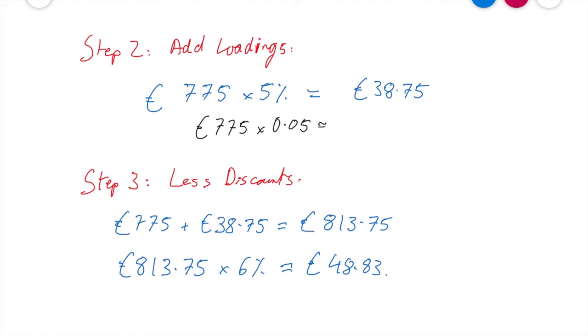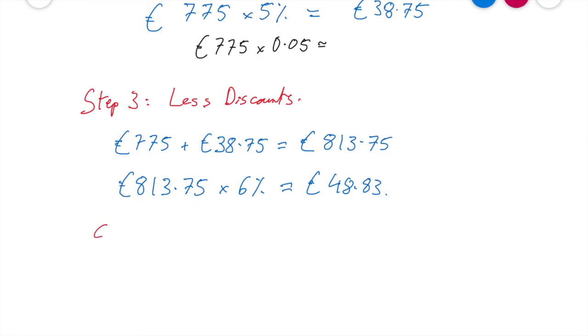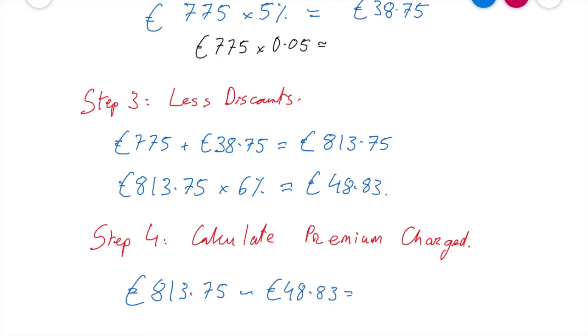Now, now that I've worked that out, step four is the last step, is to calculate, there we go, is to actually calculate the premium charged. So, how do I do that? Fairly straightforward, really, at this stage. I'm sure you've been thinking about it there. So, I'm going to take my premium that I had, and I'm going to take away my discount. So, 813.75, take away my 48.83, and I can do this in my calculator, that's going to give me a total of 764 euros and 92 cent.